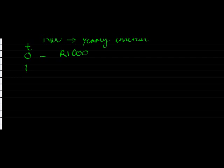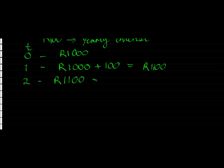At time one, after one year, I'll get one hundred rand extra, so it will be a thousand plus one hundred, giving me a total of a thousand one hundred rand. At two years, let's put it as a thousand, my original amount, plus a hundred, plus another hundred. Because for the second year I'm earning a hundred, so I will have a thousand two hundred rand.